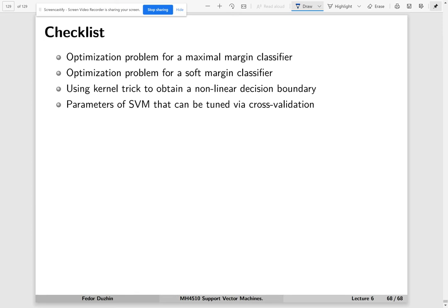This is the checklist. Basically, we have seen the geometry, all the intuition behind the support vector machine. We have seen how to convert this geometry to an optimization problem for a maximal margin classifier, which may not exist. And soft margin classifier is the same as linear SVM. We have seen how to convert this to quadratic optimization.